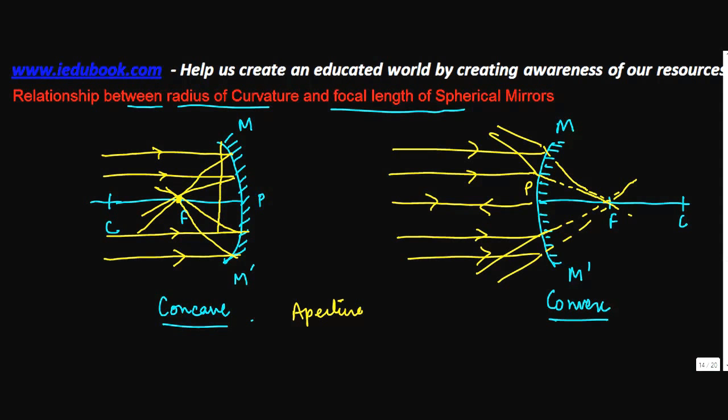Now when the aperture, so what is the aperture? Aperture is basically the size between M and M dash. When it's not too large, then if you draw all these diagrams, you will notice that the focal length is normally half of the radius of curvature.